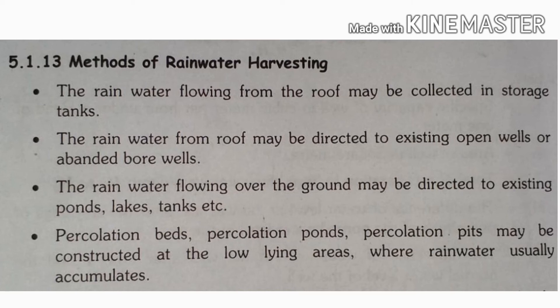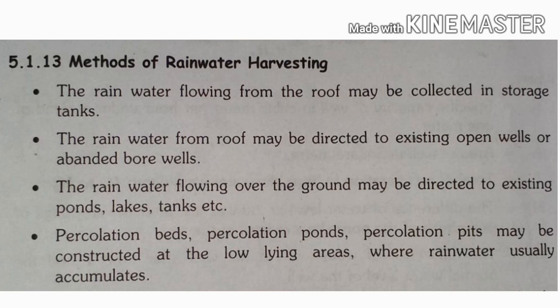This is the roof area where rainwater usually accumulates. The fourth method: a percolation bed should be made using jellies and brick layers — jellies, brick, jellies, brick. This bed is prepared so that rainwater is stored and allowed to percolate.